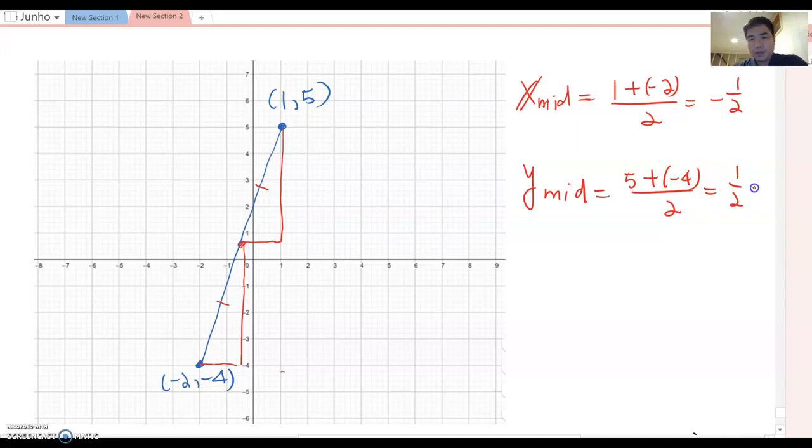So now I can guess this midpoint becomes negative 1 over 2 and then 1 over 2. Or you can use as a decimal negative 0.5 and then 0.5 here. Then let's talk about whether they really have the same distance. If it is, then we can finalize and confirm this formula is the correct midpoint formula.